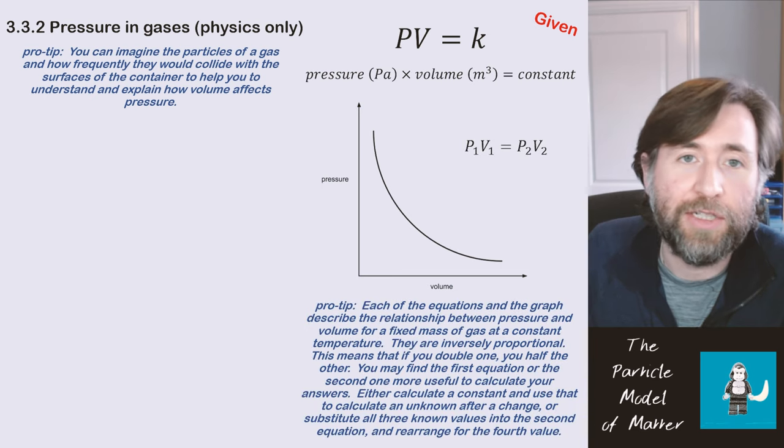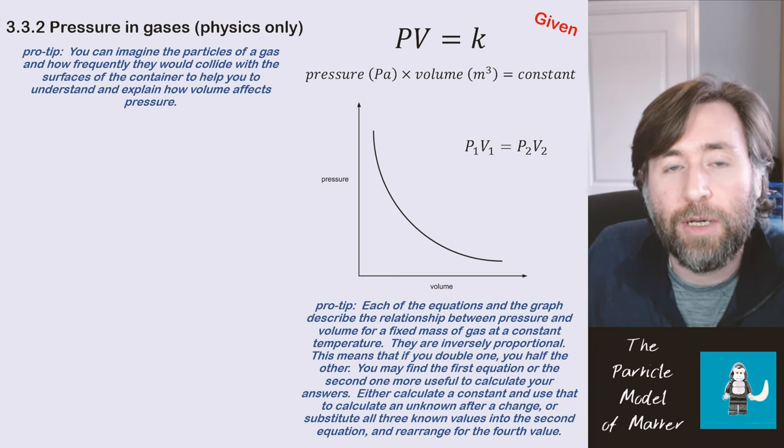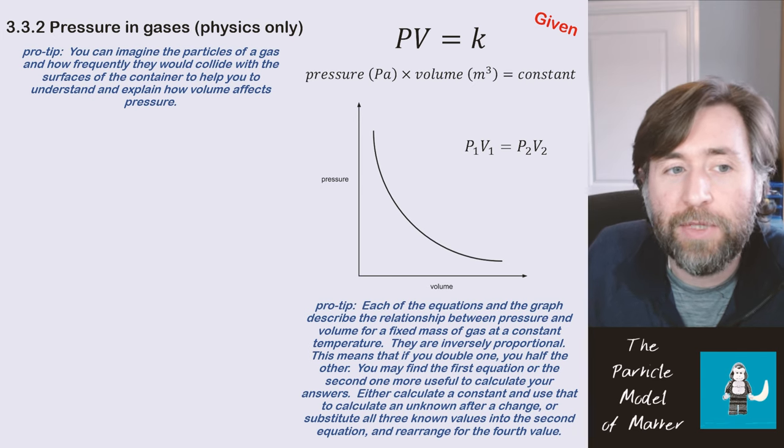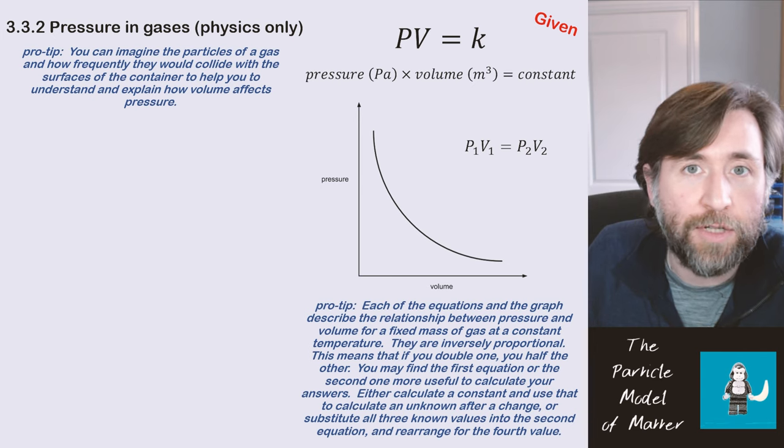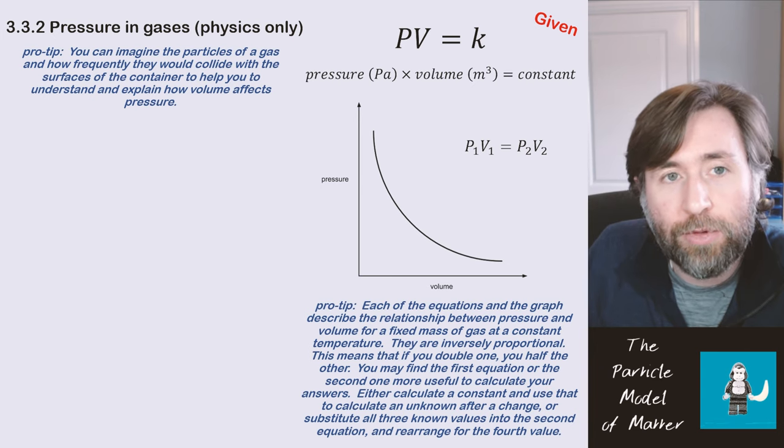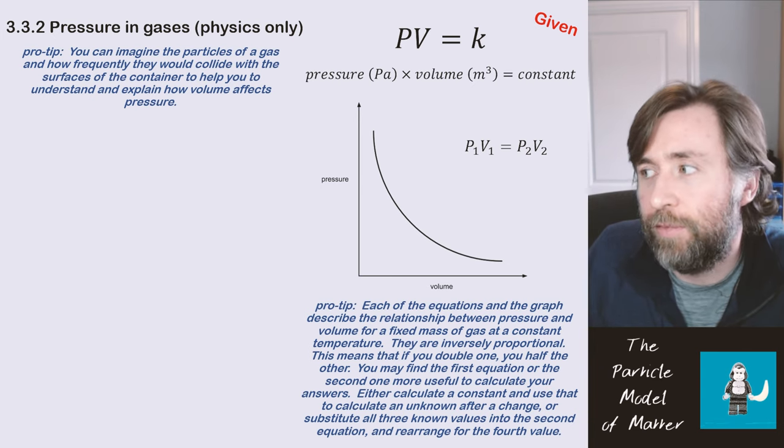You do get given the equation as it is at the top there. Pressure times volume equals a constant. You could also remember it on this graph here, which shows inverse proportionality. If you double the pressure, you halve the volume. That's what this graph shows.